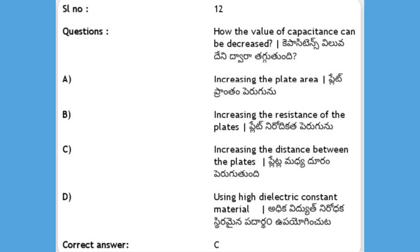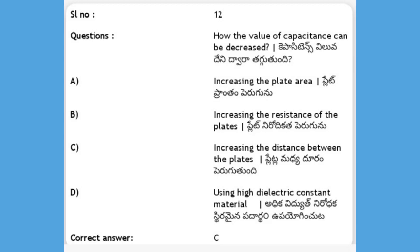Next, how can the value of capacitance be decreased? Options: A) increasing the plate area, B) increasing the resistance of the plates, C) increasing the distance between the plates, D) using high dielectric constant material. The answer is C, increasing the distance between the plates. When the distance increases between the plates, the capacitance decreases.